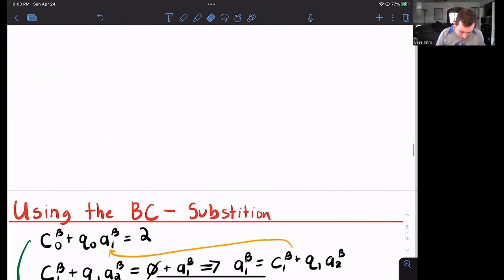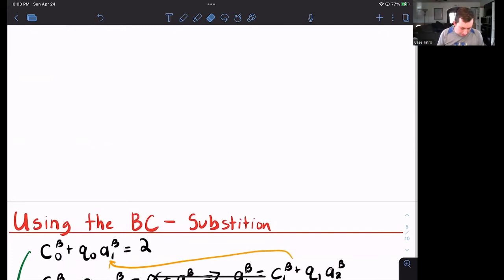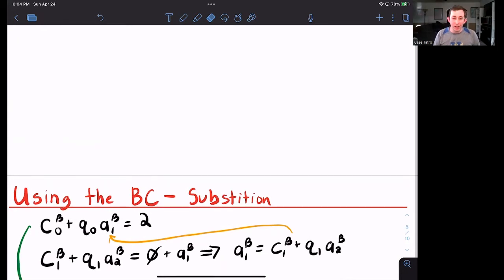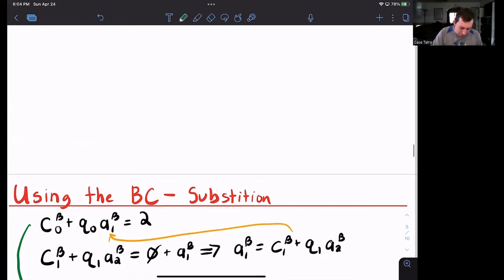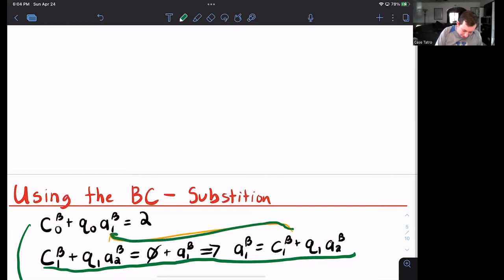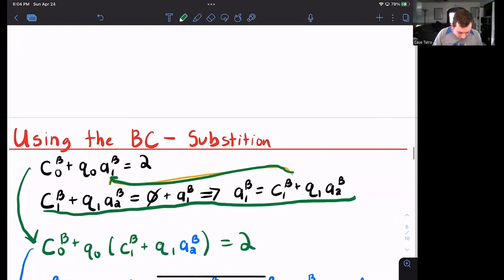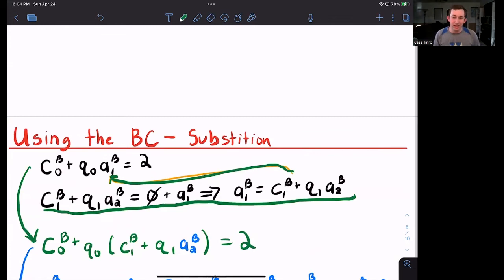So here we have the first budget constraint, which is for Bill. It's just Bill's consumption in period zero plus the price in period zero times Bill's assets tomorrow. And that's equal to his endowment of two. But I know that Bill also has a budget constraint in period one. This is Bill's budget constraint in period one. I'm just going to solve that for A1. And as this arrow suggests, we're just going to plug that in for A1 here. And we're going to get this green budget constraint here.